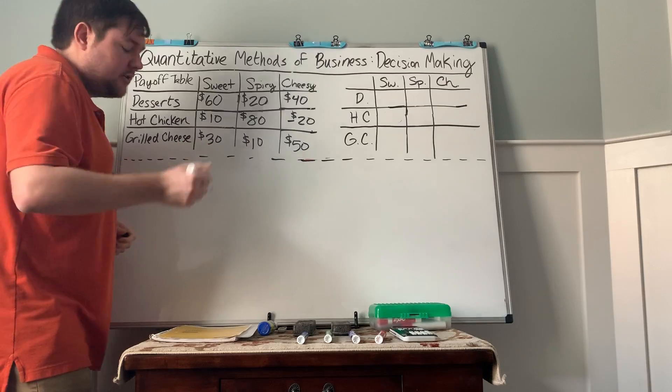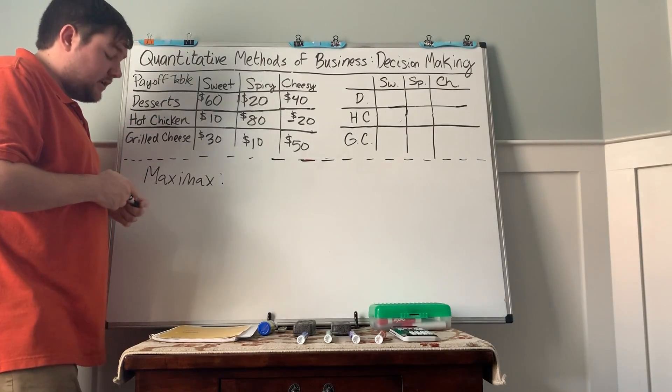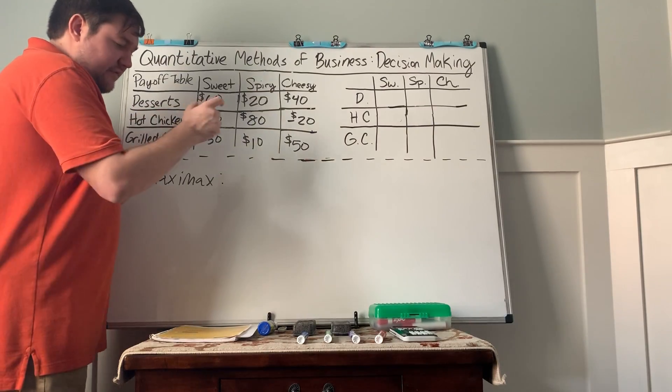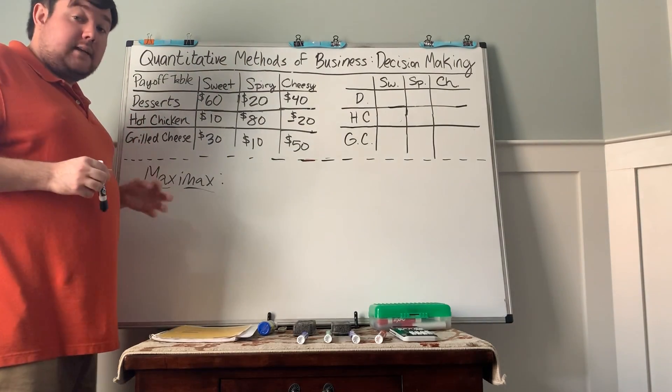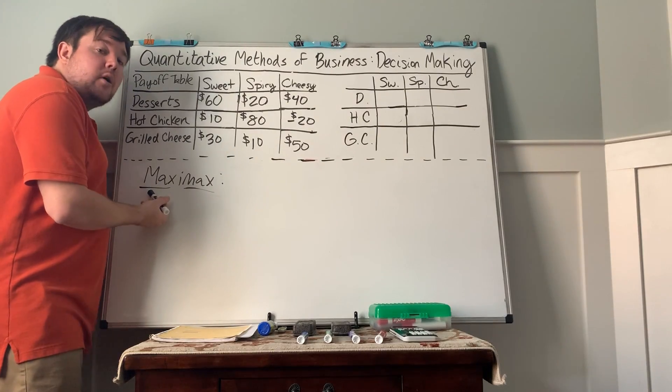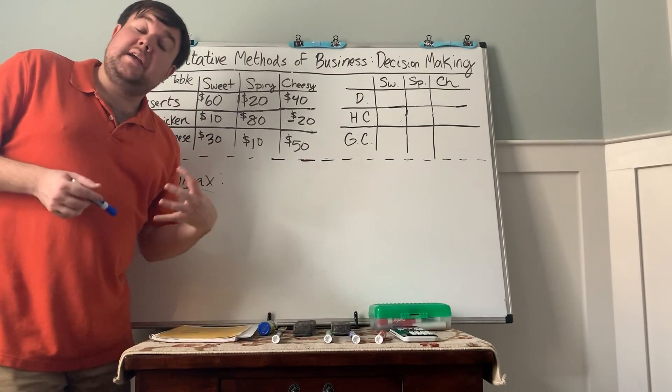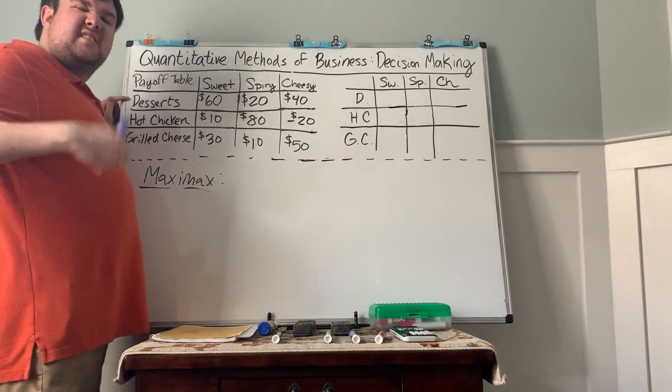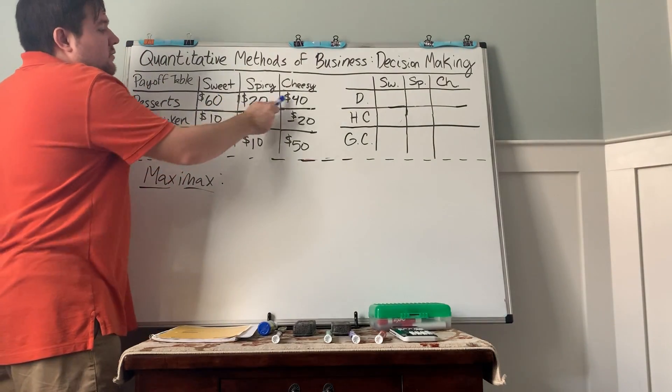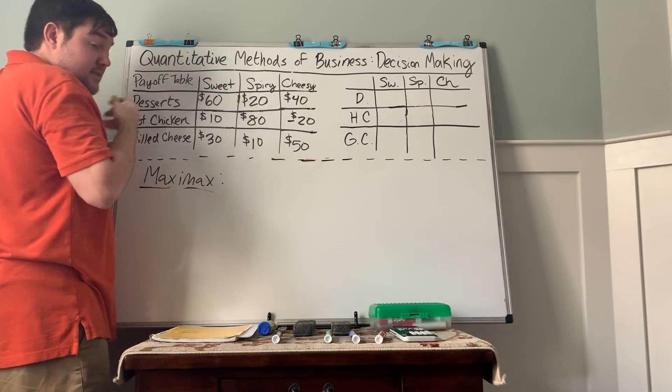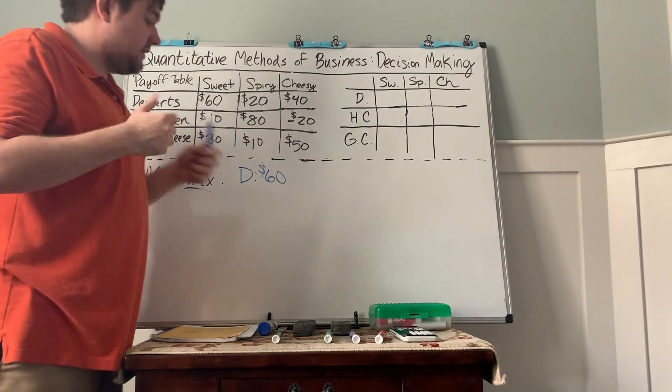The first criterion we're going to look at is the maxi-max criterion. It is the maximum of the maximum payoffs. In this case, what you're going to be doing is say, let's say we go with the dessert shop. What's the biggest profit we could see from our dessert shop? 60, 20, 40? It's got to be 60 in the sweet category. So I'm going to say that desserts, we stand to make $60,000 on it.